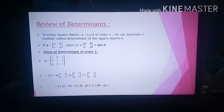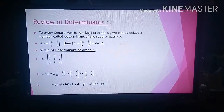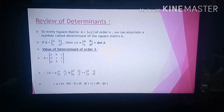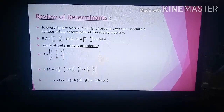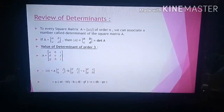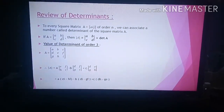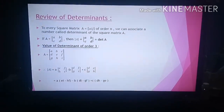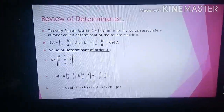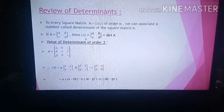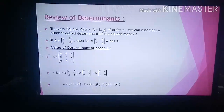The first thing is you have to know what determinants are. For every square matrix A equal to small aij, that is each element of the matrix of order n, we can associate a number that is called the determinant of the square matrix A. Suppose a matrix A is ABCD and we can denote it under the modular sign as determinant A.